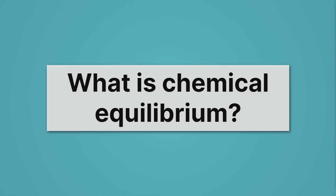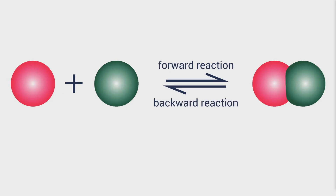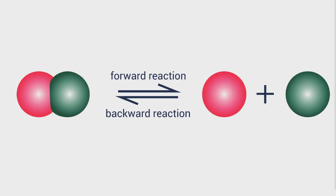What is chemical equilibrium? Chemical equilibrium is when a chemical reaction runs forward and backwards. Here we have a chemical reaction where the red sphere representing an atom combines with the green sphere representing an atom — they join together to form a molecule on the right. But this reaction, represented by the forwards and backwards arrows, runs both ways, so the molecule can also split apart.